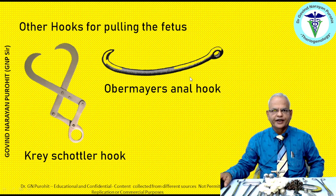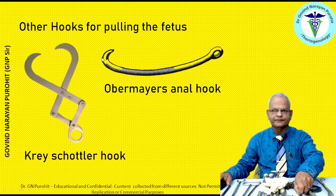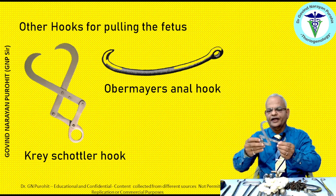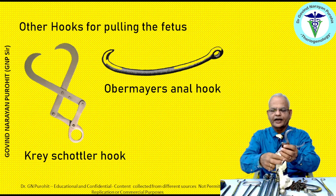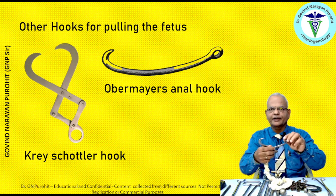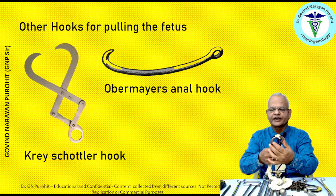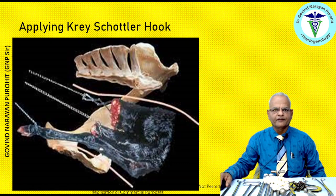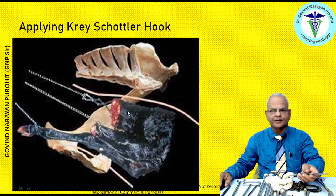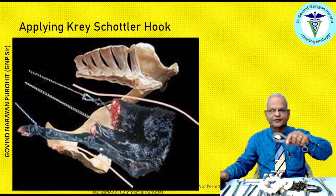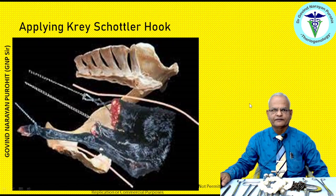The Obermeyer's anal hook is placed in the anus of the fetus if the fetus is in posterior presentation. The Craze-Cutler hook has jaws that, when pressed, get deeper into the tissues of the fetus for anchorage. This hook is useful during fetotomy or when part of the fetus is broken and there is no place to pull. The Craze-Cutler hook is applied on the broken part, goes deeper inside the soft tissues, and you can then pull that part of the fetus.